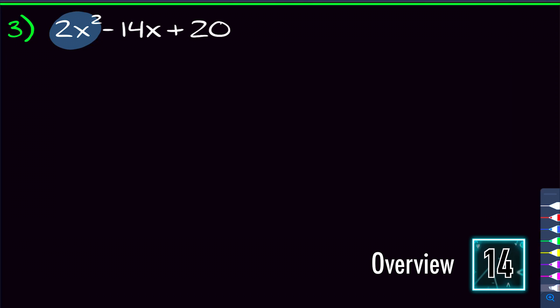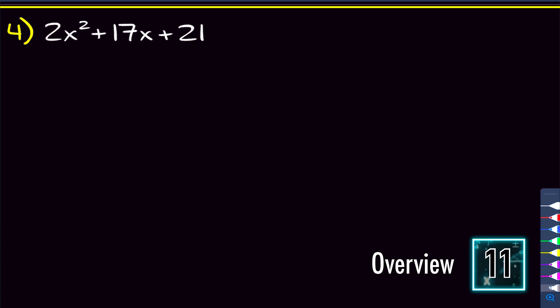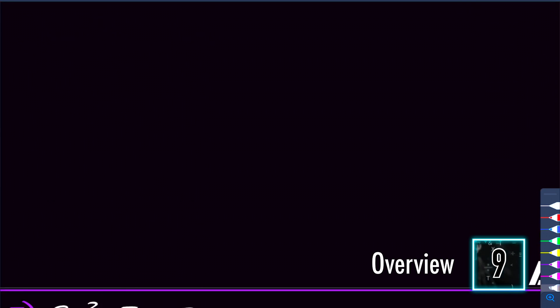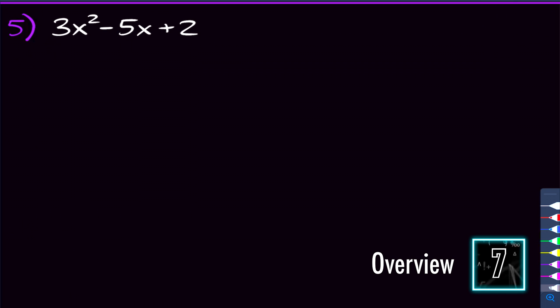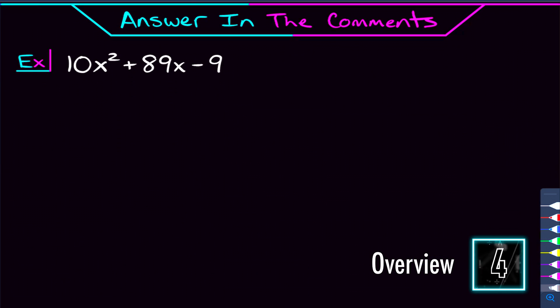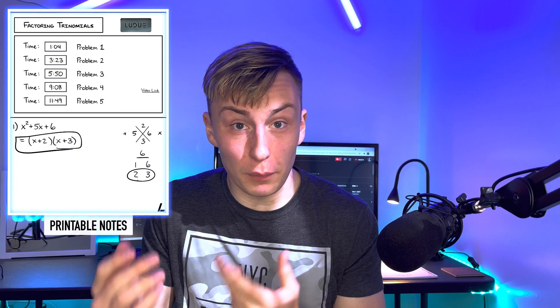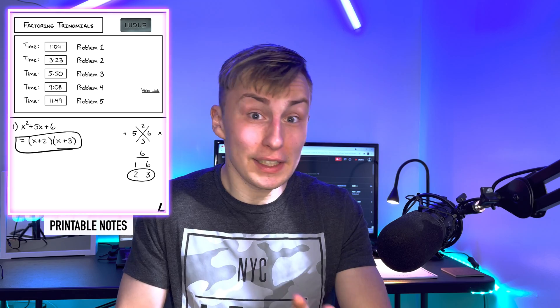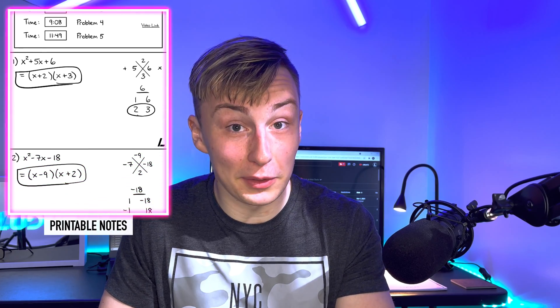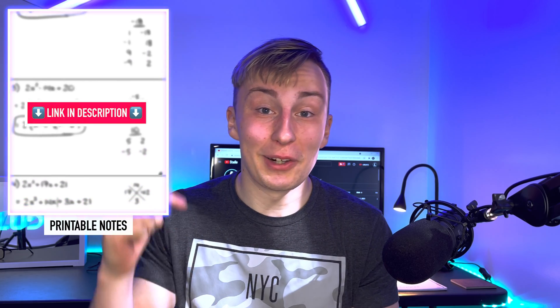In problem three we'll actually be able to get that 2 away from the x squared and factor like normal, but in problems four and five we'll have to factor by grouping. After we go through all that I'll give you a problem to try in the comments. If you're looking for the printable notes I made especially for you for this video, they're going to be linked right in the description.